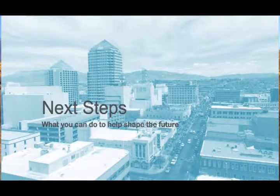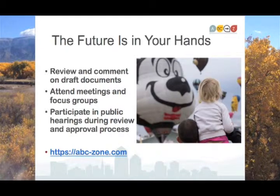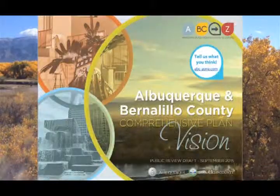The comprehensive plan is a community document and will only be successful with your help. The comprehensive plan is currently being written — we need your help. The project website is abczone.com. There you can find draft documents for your review and comment, as well as information about upcoming meetings and focus groups. The comprehensive plan is expected to enter the review and approval process in late fall of 2015. We hope that you will participate in hearings, because the future is in your hands. This is your vision, and we need your comments to make sure our future is what you want.